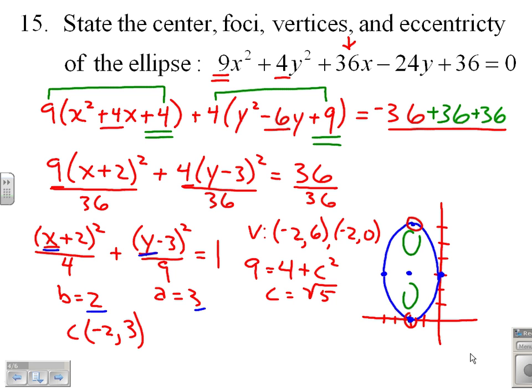So about 2.2, 2.3ish, somewhere in there. So I go up a little bit more than 2, down a little bit more than 2. And here's a challenge for some people, is going ahead and naming the foci.